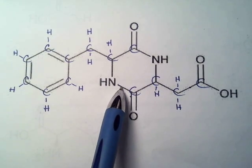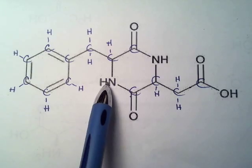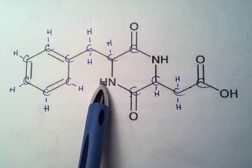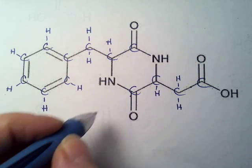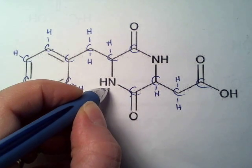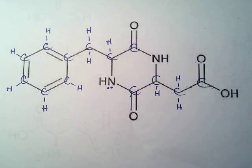Nitrogen has 2, 4 — and then there's a single bond to the hydrogen, so I'm counting six. Nitrogen only has six electrons in bonds, so we know that this nitrogen has a lone pair.